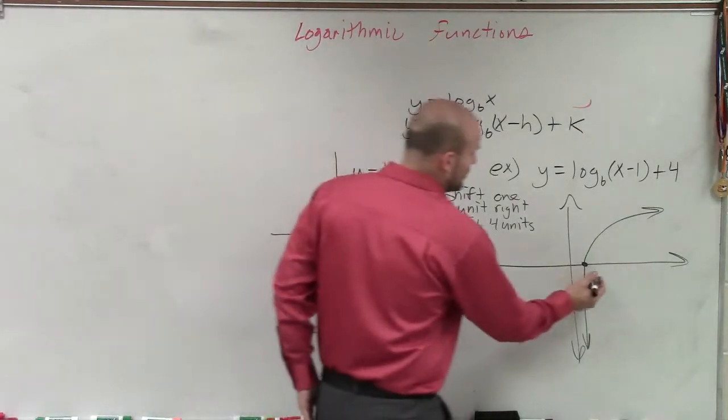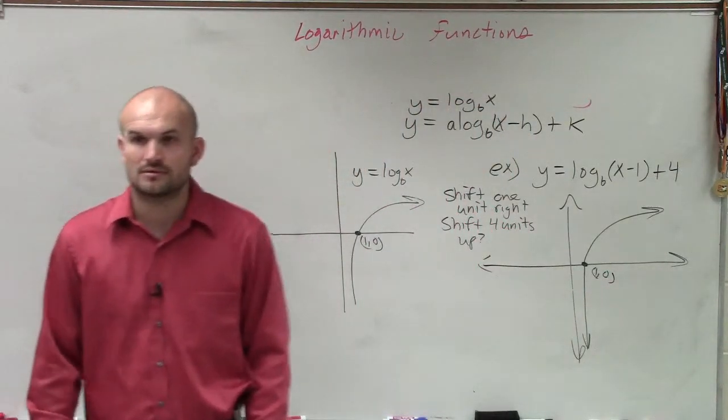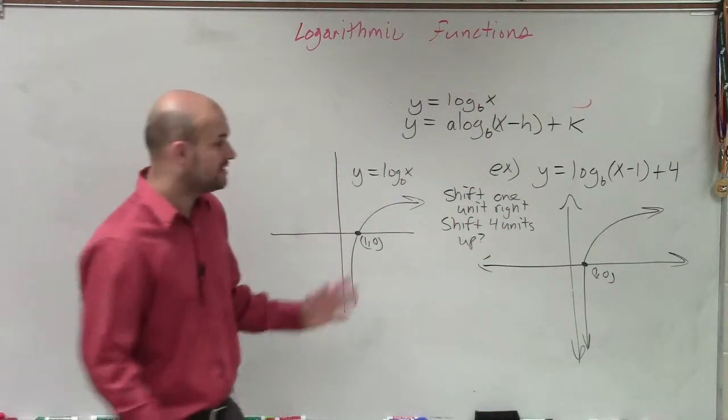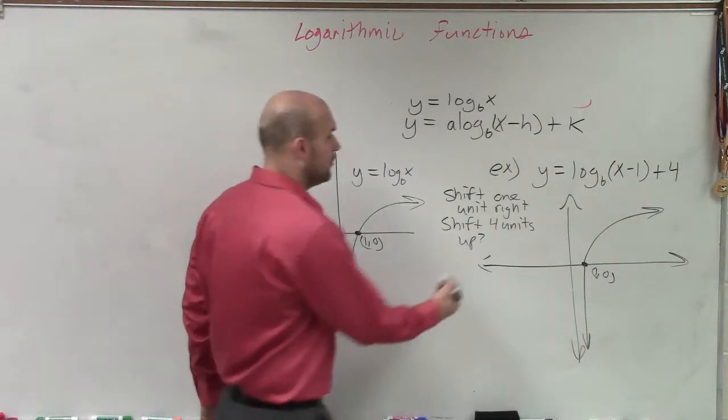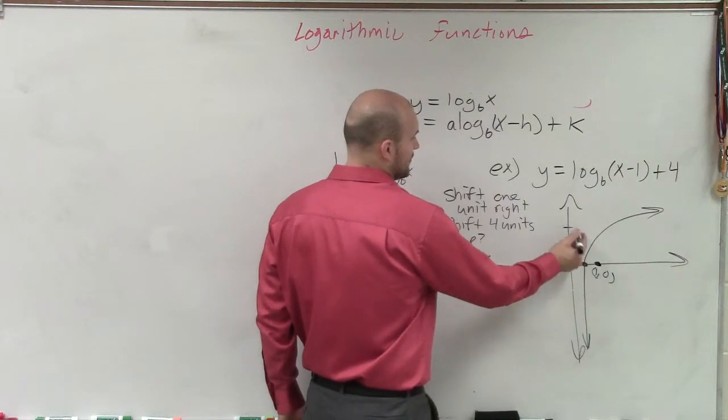And the one point we know that we have that we figured out was 1 comma 0, right? So now, we just need to shift that one unit to the right and then four units up: 1, 2, 3, 4.